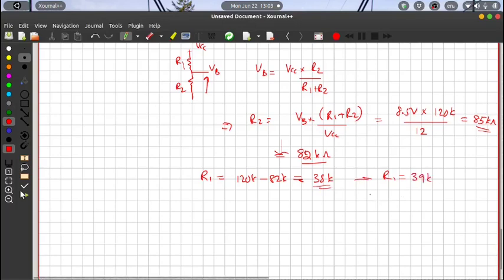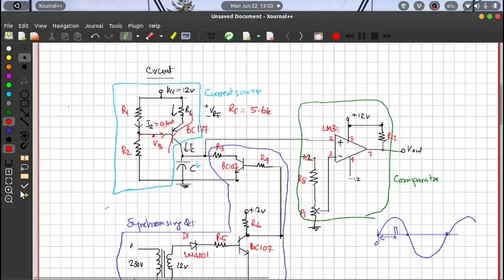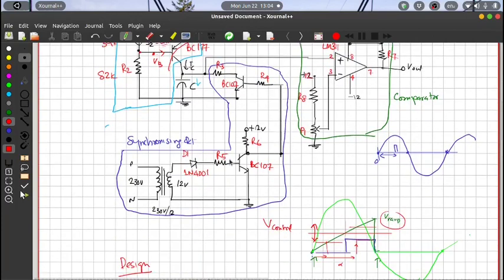Then R1 is equal to 120 K minus 82 K which is 38 K, so the nearest standard value is R1 is equal to 39 K or the lower value 33 K can also be used. Only thing is that both these values you should make sure that the base emitter junction is forward biased and the collector base junction is reverse biased, ensuring proper transistor biasing here. So this R2 is 82 K and this is 33 K or 39 K in case that works.